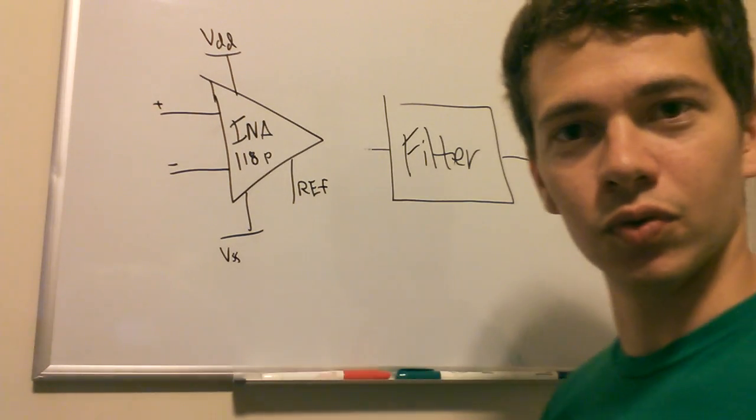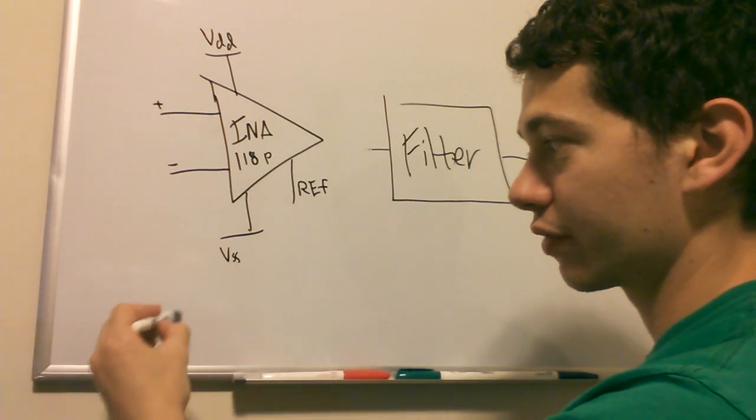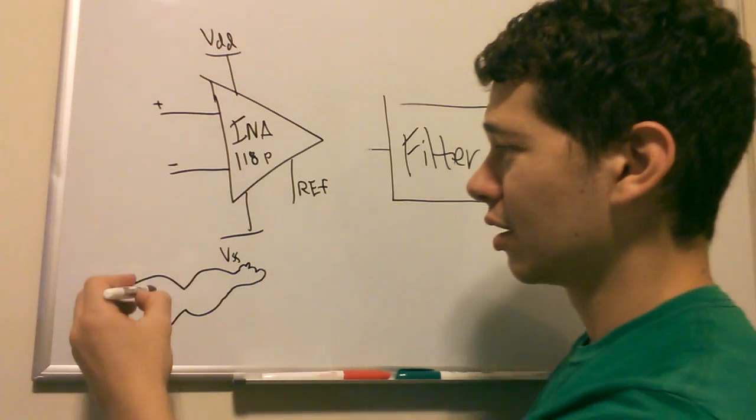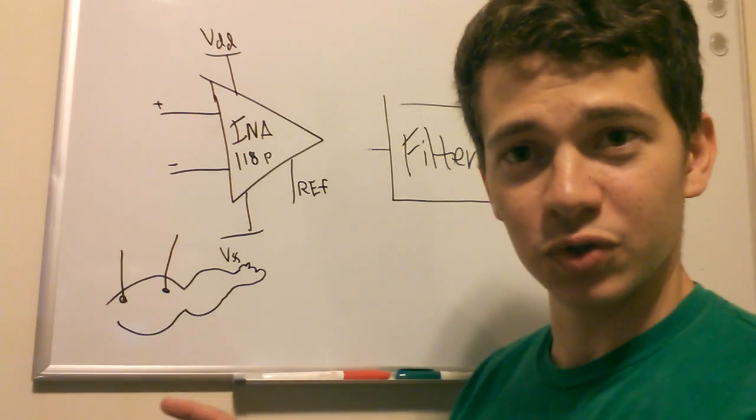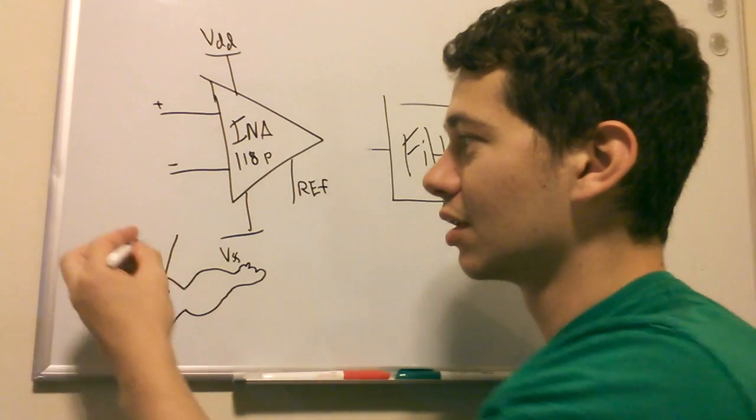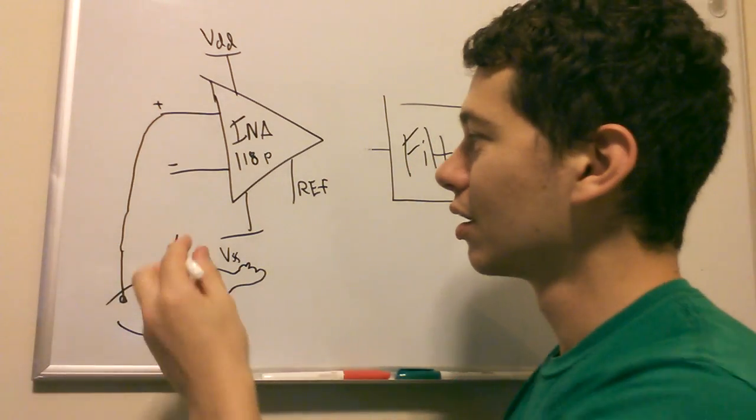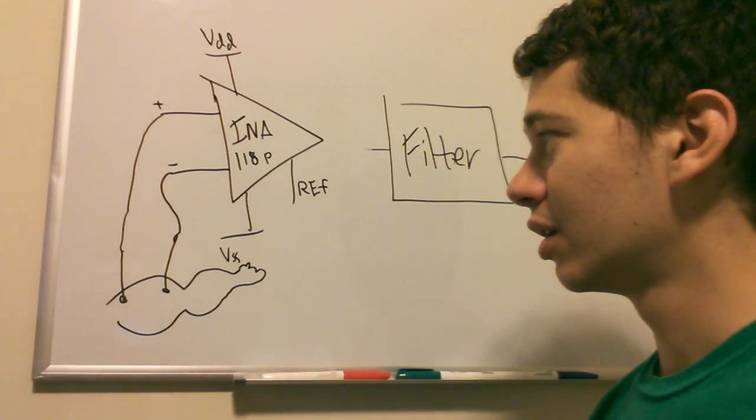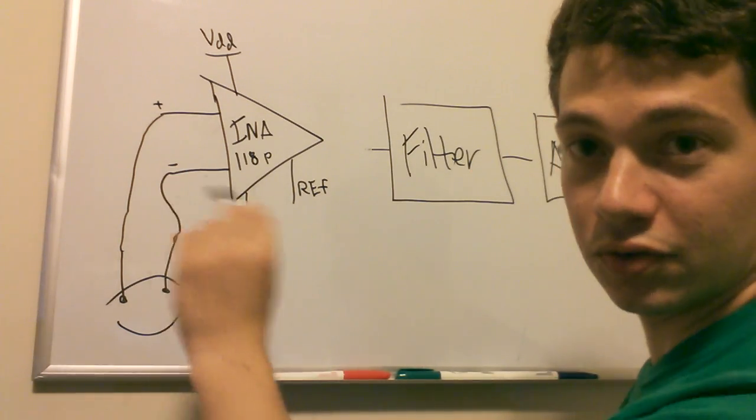So if we're doing EMG, let's say we have someone's arm here. He's pretty jacked. Let's say you have an electrode here and an electrode here. We want to know the difference between the voltage difference between those two electrodes. That's basically what EMG is. And I might have the orientation wrong, like which one's negative, which one's positive. You can just flip it around and see which one works better. So that's our input.